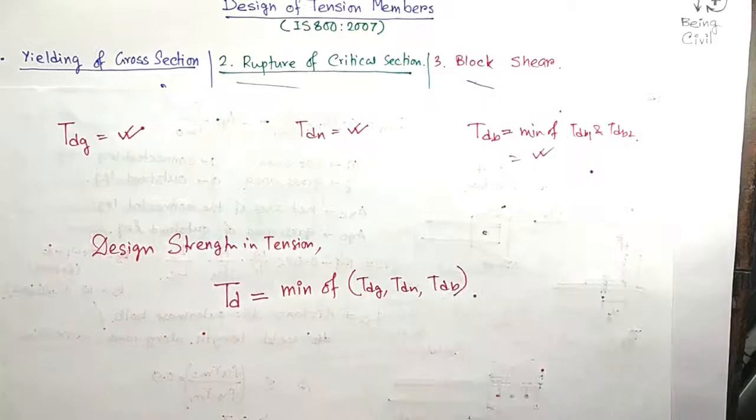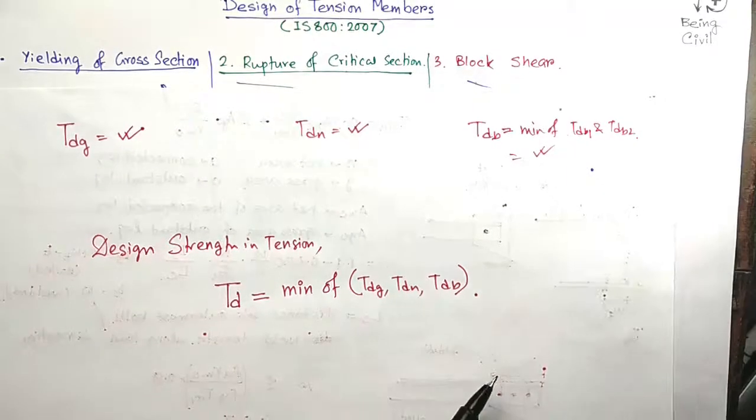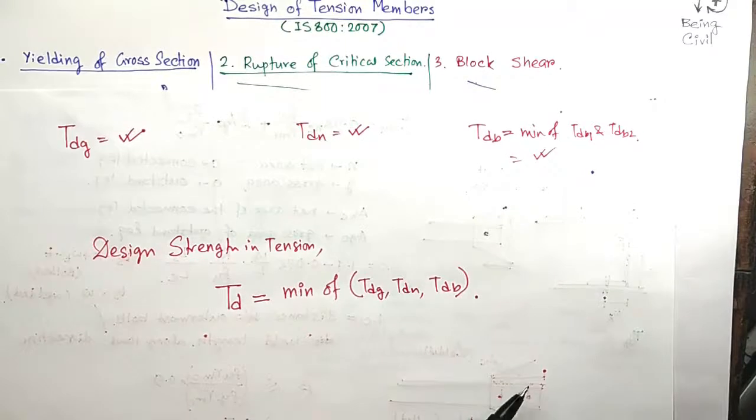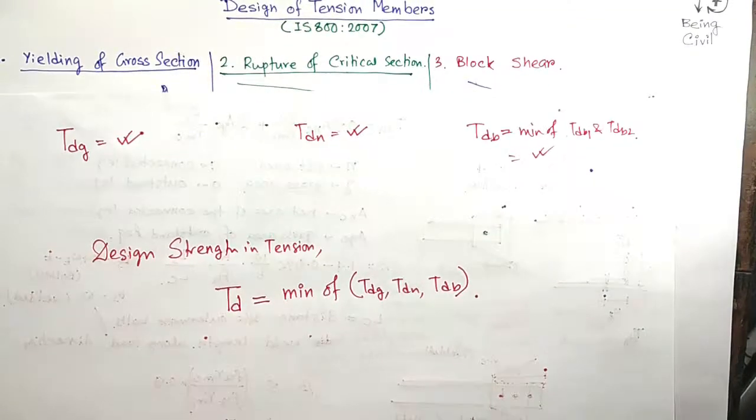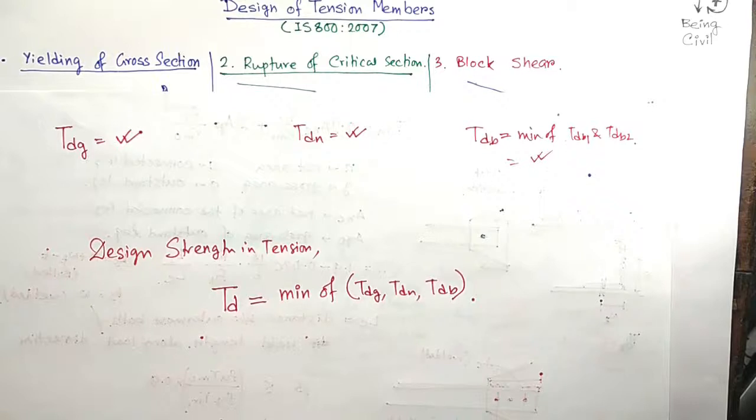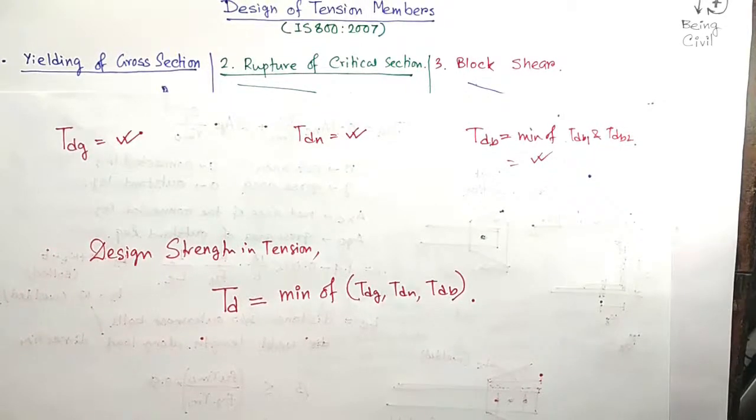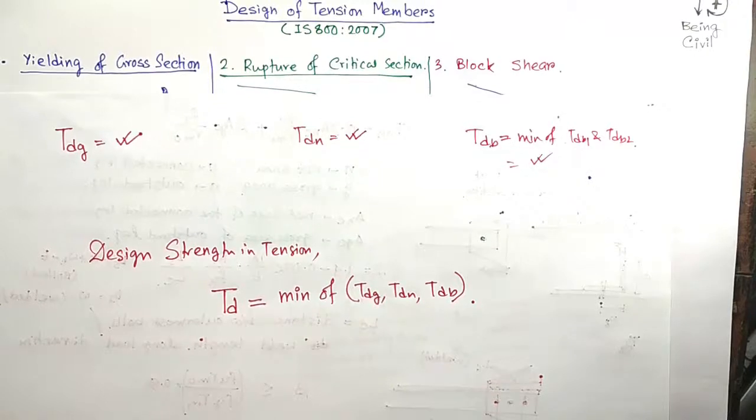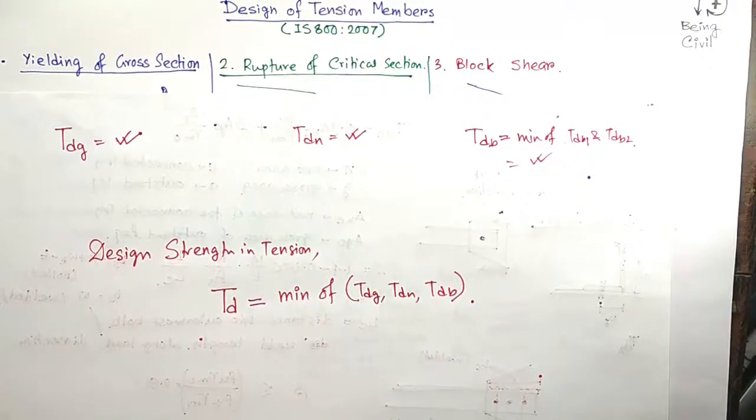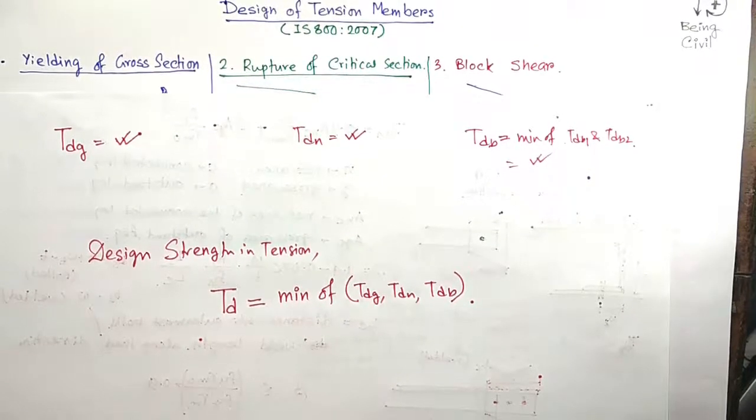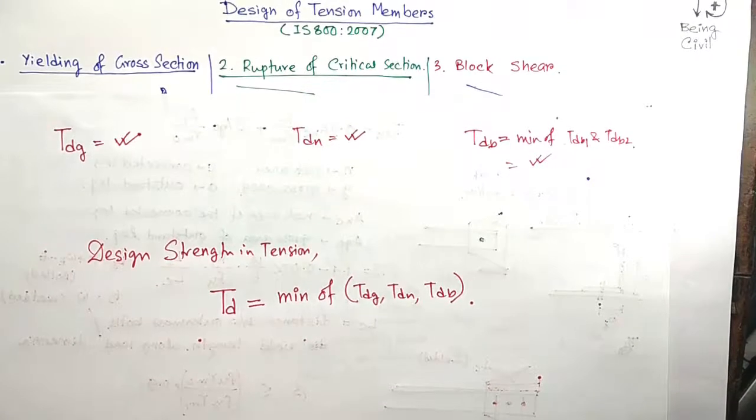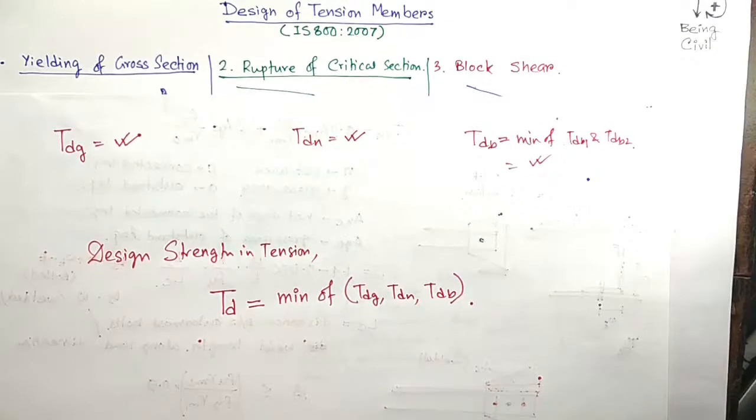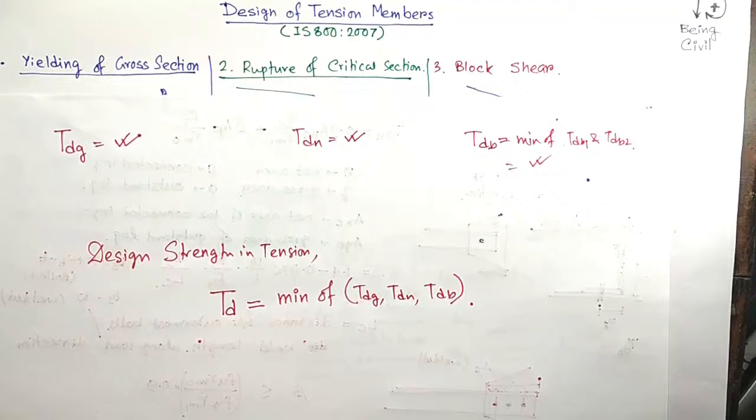So that's all friends. In the next video, we will do an example and calculate the design strength of an angle section connected by bolts. These are only the member strengths we have calculated. We have not designed the connection. There may be connection failure also, but in this video we only discussed the design of members, the strength of members in tension. In later videos, we will discuss the connection strength of bolts, welds, etc. Hope you like this video. Thanks for watching. See you in the next video.